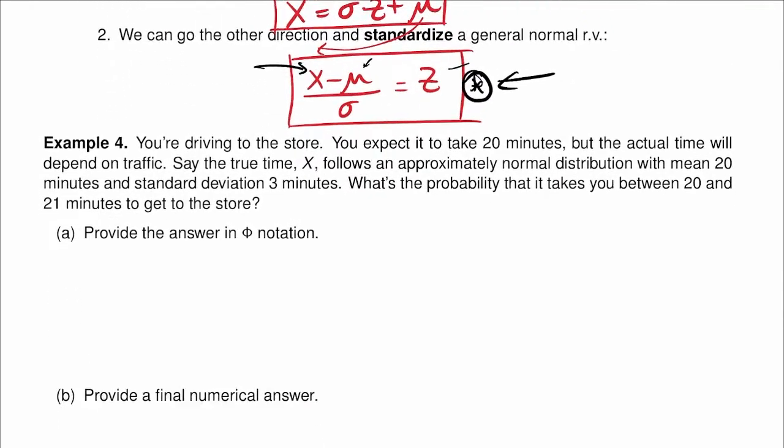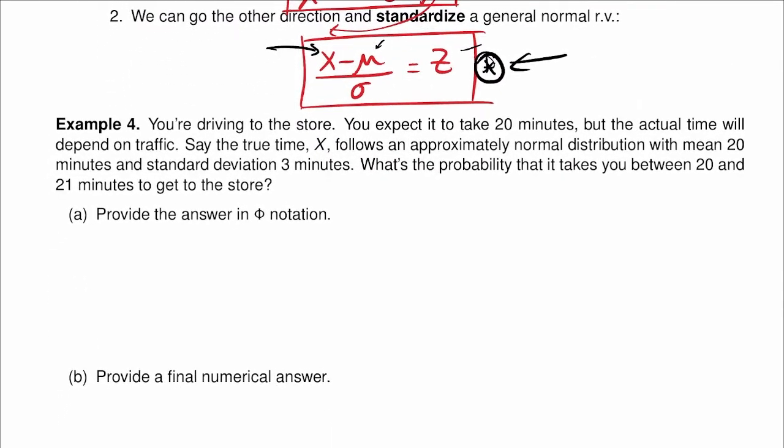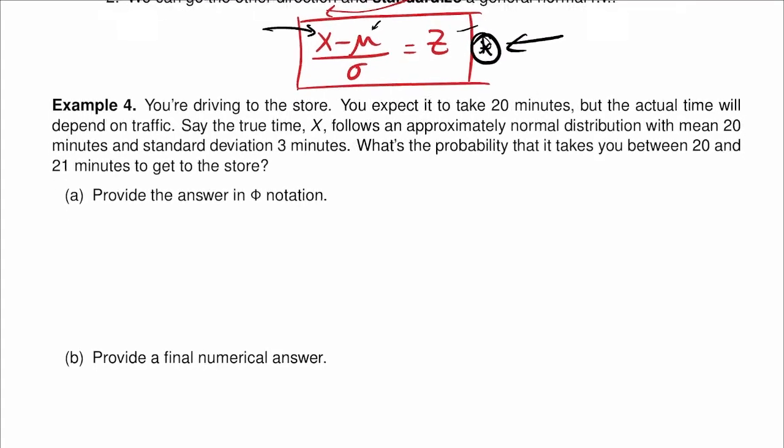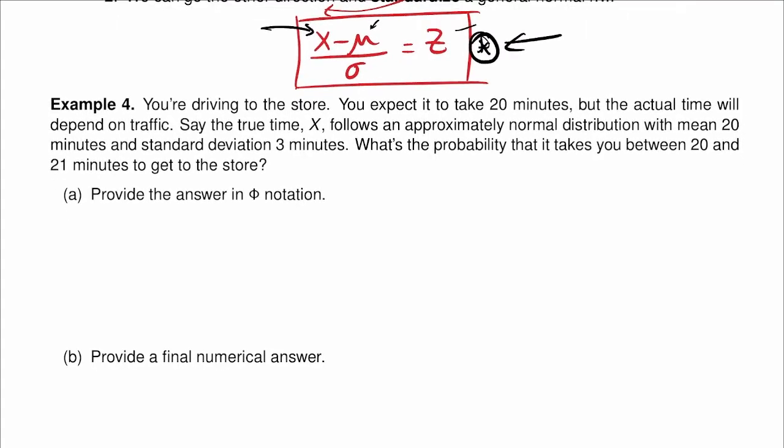Let's see an example of how this works. You are driving to the store. You expected it to take 20 minutes, but the actual time will depend on traffic. The true time x follows an approximately normal distribution with mean 20 minutes and standard deviation 3 minutes. What is the probability that it takes between 20 and 21 minutes to get to the store?